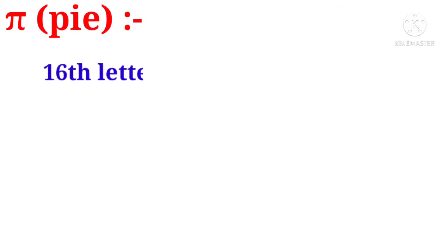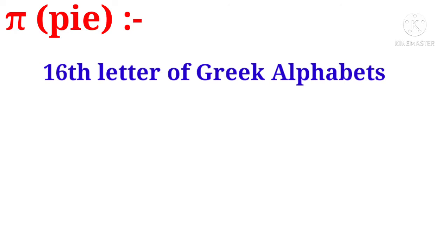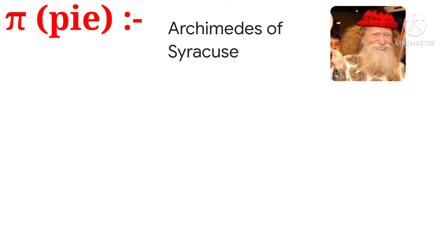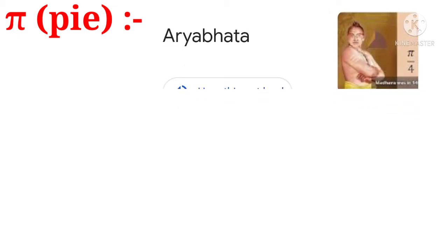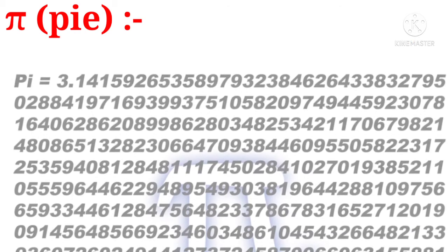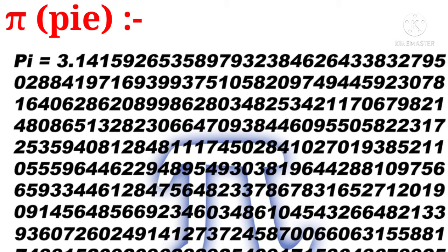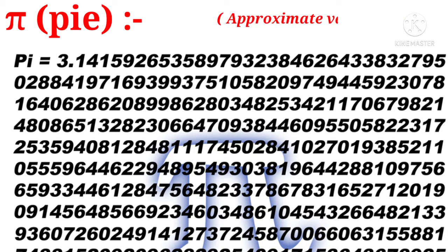Now let us know what pi is. Pi is the sixteenth letter of the Greek alphabet, used for a famous mathematical constant — first studied by ancient mathematician Archimedes of Syracuse. Indian ancient mathematician Aryabhata also gave a value to pi. Pi is a very big number starting with integer 3, followed by a decimal point with 31 trillion digits found so far, neither ending nor repeating, so pi is treated as an irrational number. Scientists use 3.14 as an approximate value of pi.